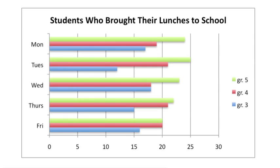Take a look at this triple bar graph. This graph shows students bringing lunch to school by grade level. How many more fifth graders than third graders brought their lunch to school on Tuesday? Compare the green bar to the blue bar. Whisper the correct answer to your classmate.